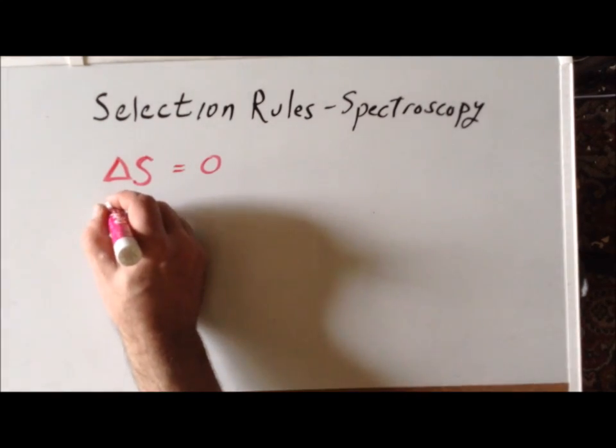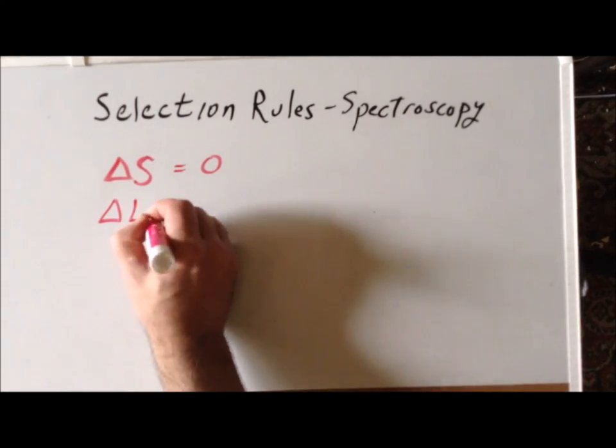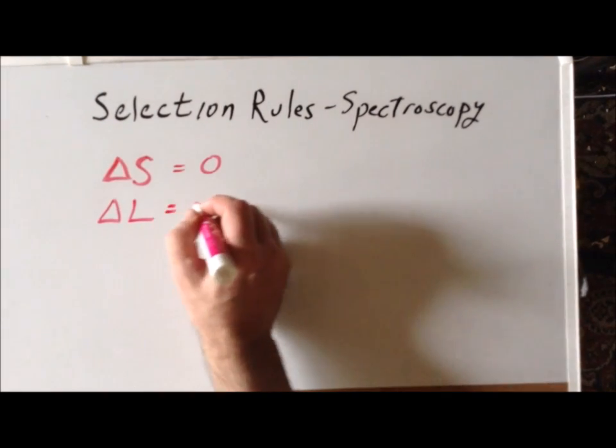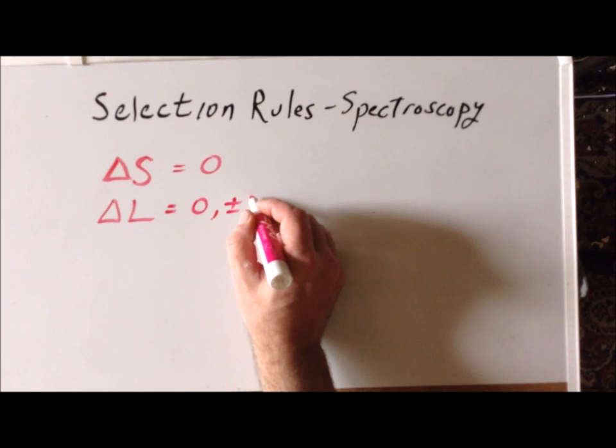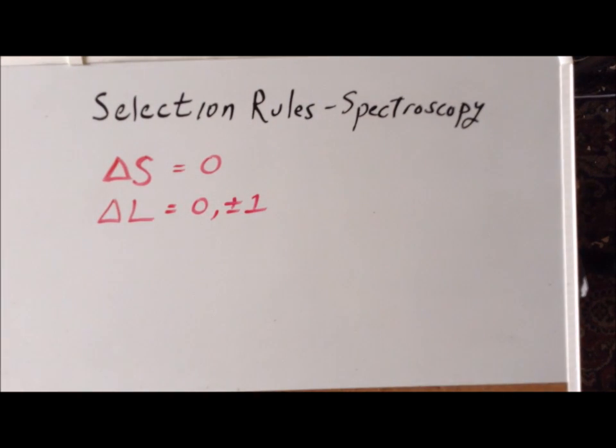As far as the orbital angular momentum, capital L, the change in L is going to be equal to zero plus or minus one. For reasons that we had already looked at before.